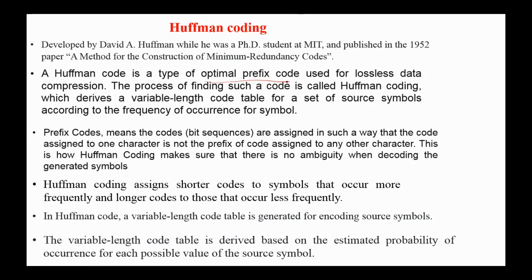Next, Huffman coding. A Huffman code is a type of optimal prefix code used for lossless data compression. The process of finding such a code is called Huffman coding. Prefix codes means the codes are assigned such that the code assigned to one character is not the prefix of the code assigned to any other character. This is how Huffman coding ensures there is no ambiguity when decoding the generated symbols. Huffman coding assigns shorter codes to symbols that occur more frequently and longer codes to those that occur less frequently. A variable-length code table is generated for encoding source symbols, derived based on the estimated probability of occurrence for each possible value of the source symbol.